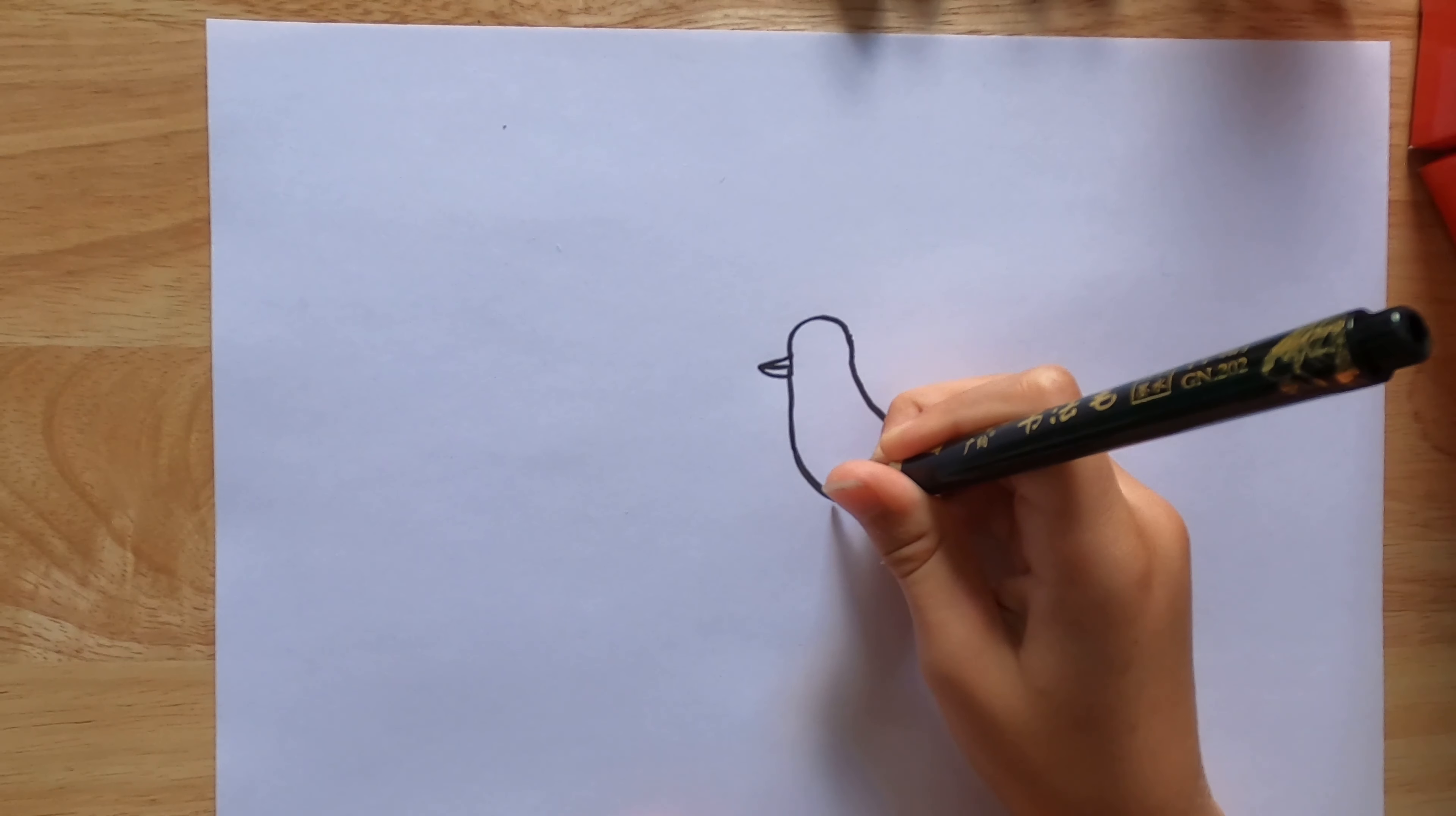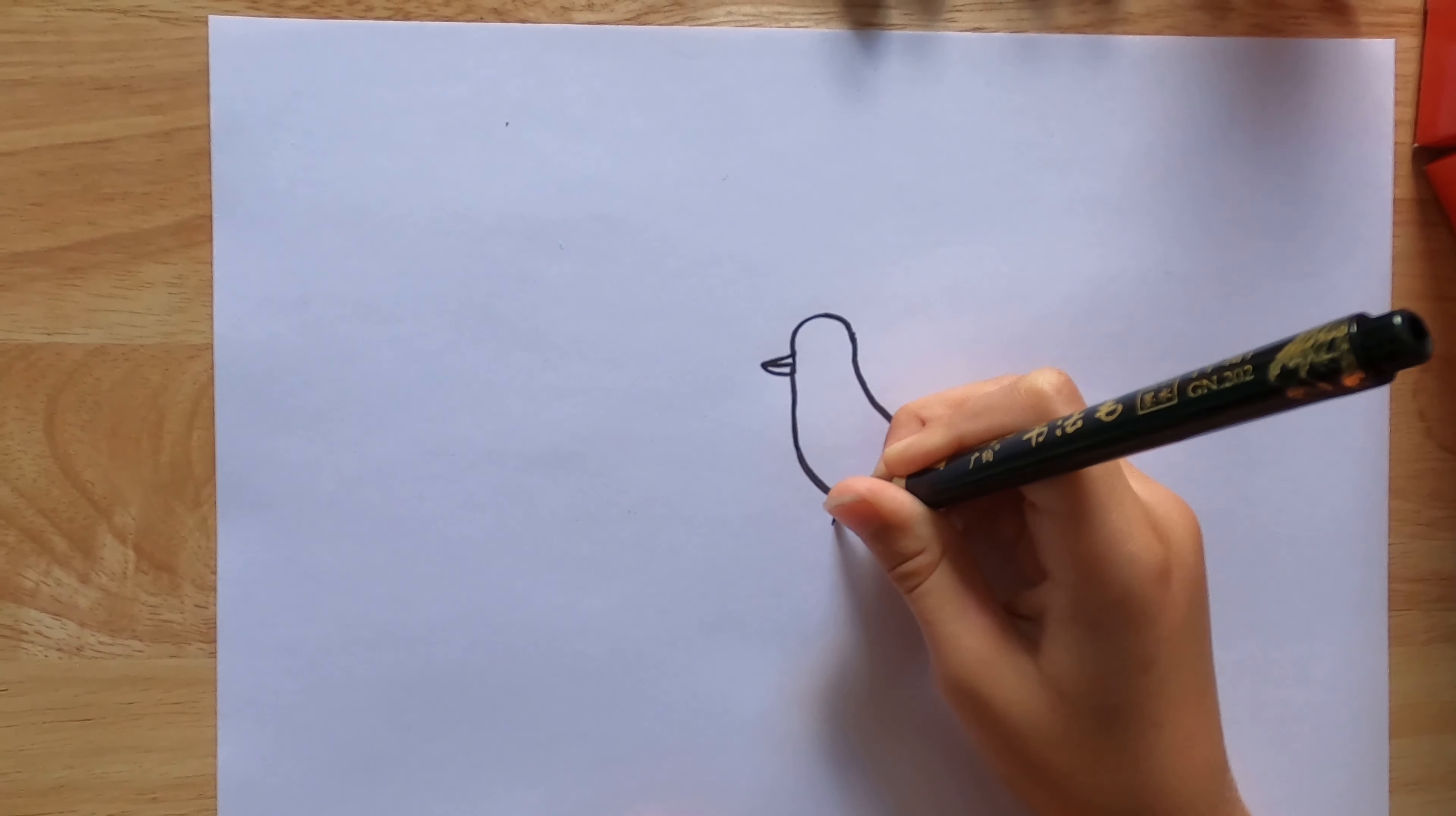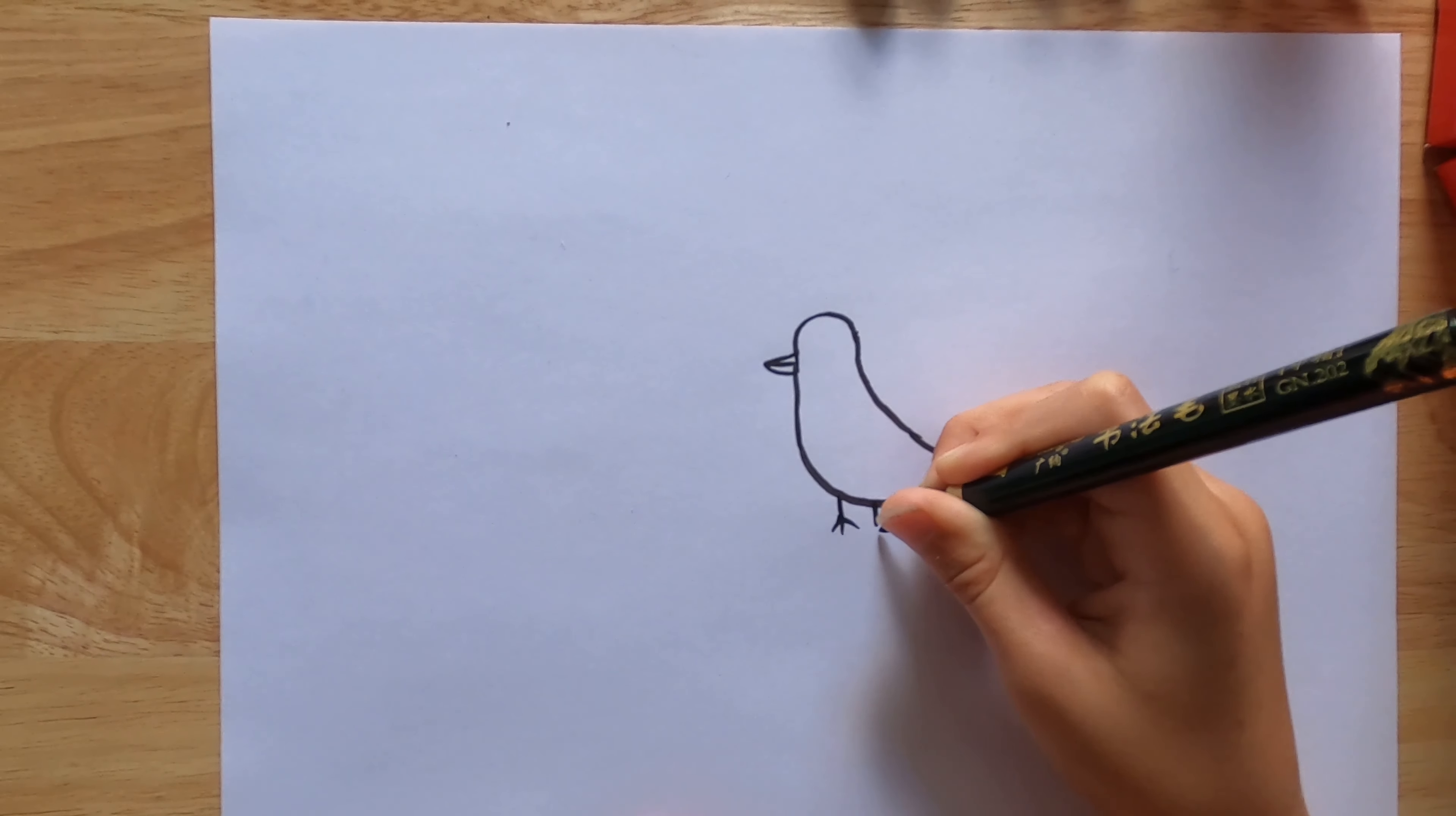Now we're going to draw the feet. Just one line, two line, three line and four line. Same on the other side.